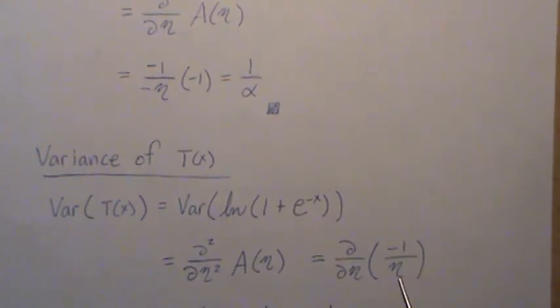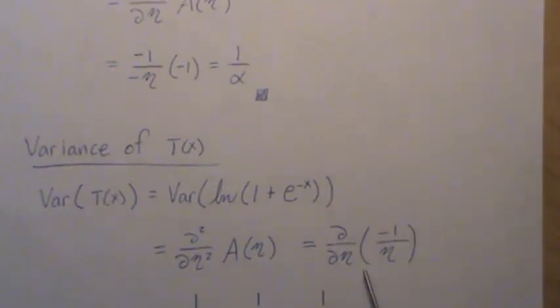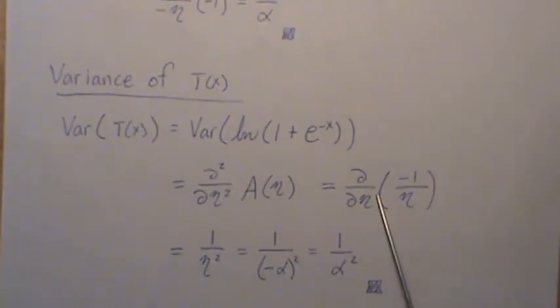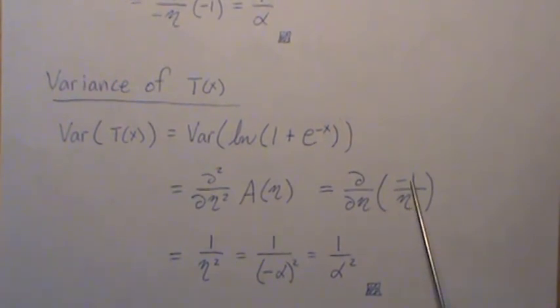So now when we take the derivative of this, I like to think of it as bring it up and raise it to minus 1. So then the minus 1 comes out front, times that minus 1, makes it a positive. And then you subtract 1 from the exponent, giving minus 2, but then that can go back down.